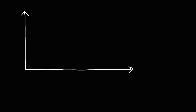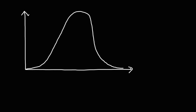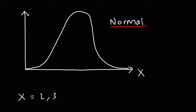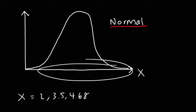In this video, we're going to talk about continuous probability distributions. Here's an example of a type of continuous probability distribution — this one is called the normal distribution. It has the continuous random variable x, which could be anything: 2, 3.5, 4.68, or anything along the x-axis.